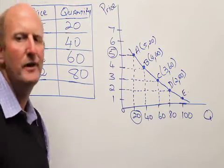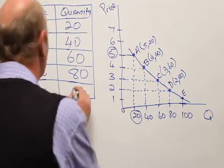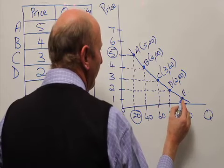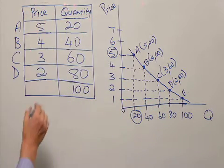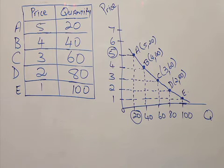And then lastly, point D—E. Here I draw a line downwards and the quantity here is 100. Drawing a line across, we see at point E, the price associated with that 100 quantity is 1 grand.